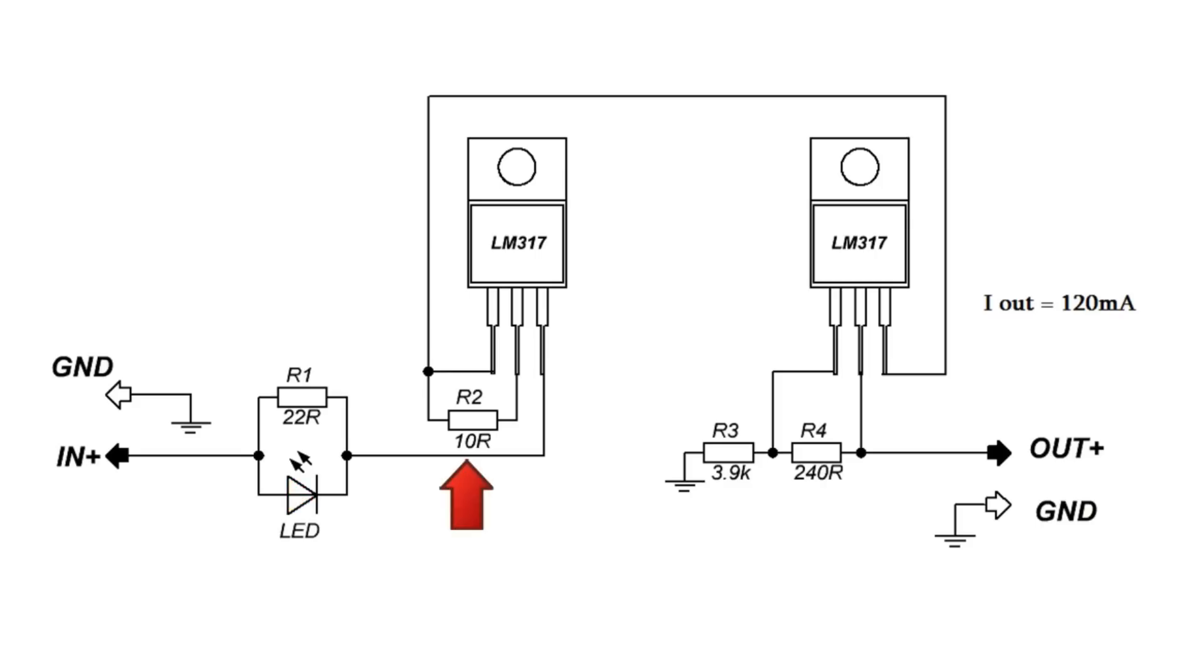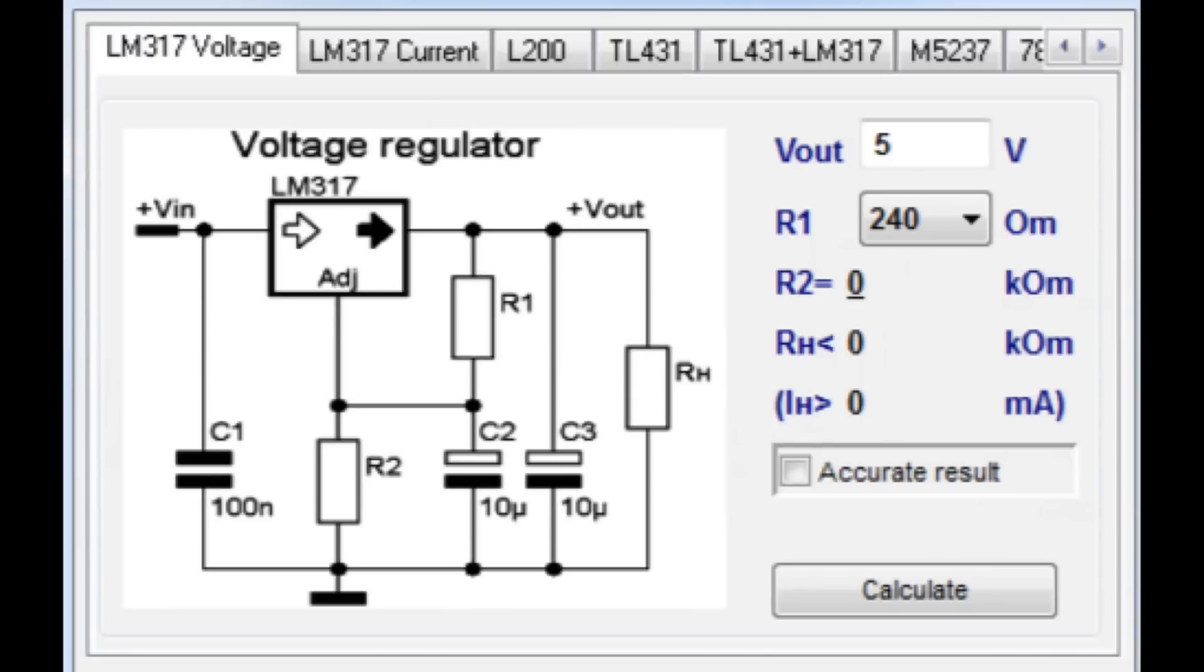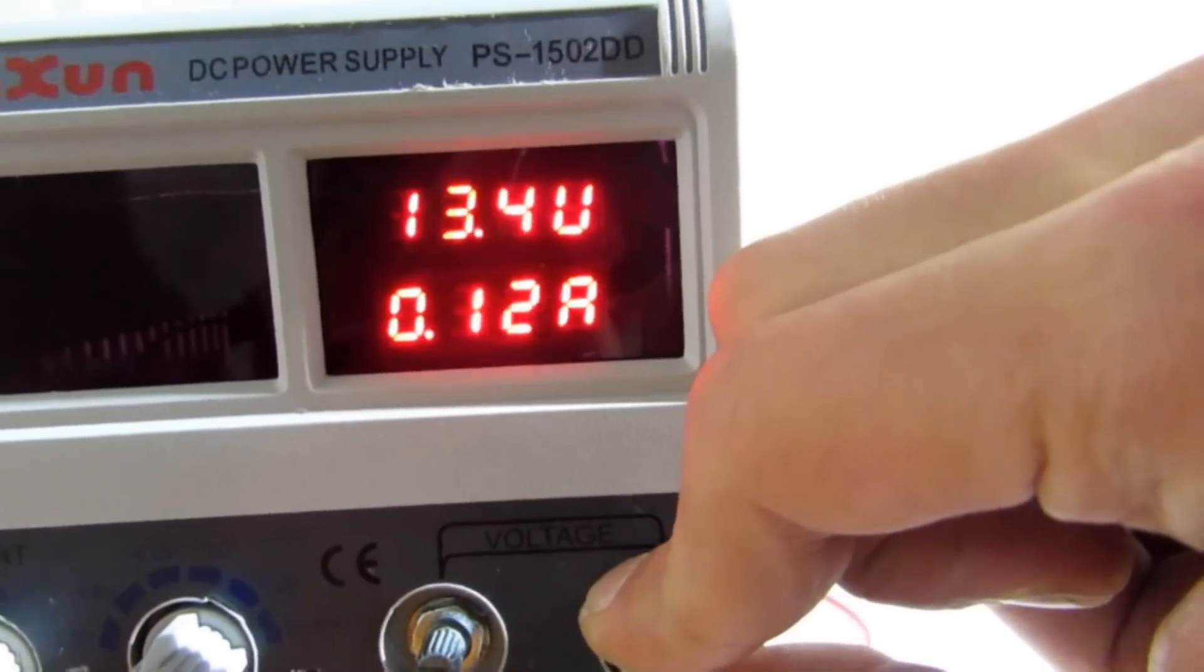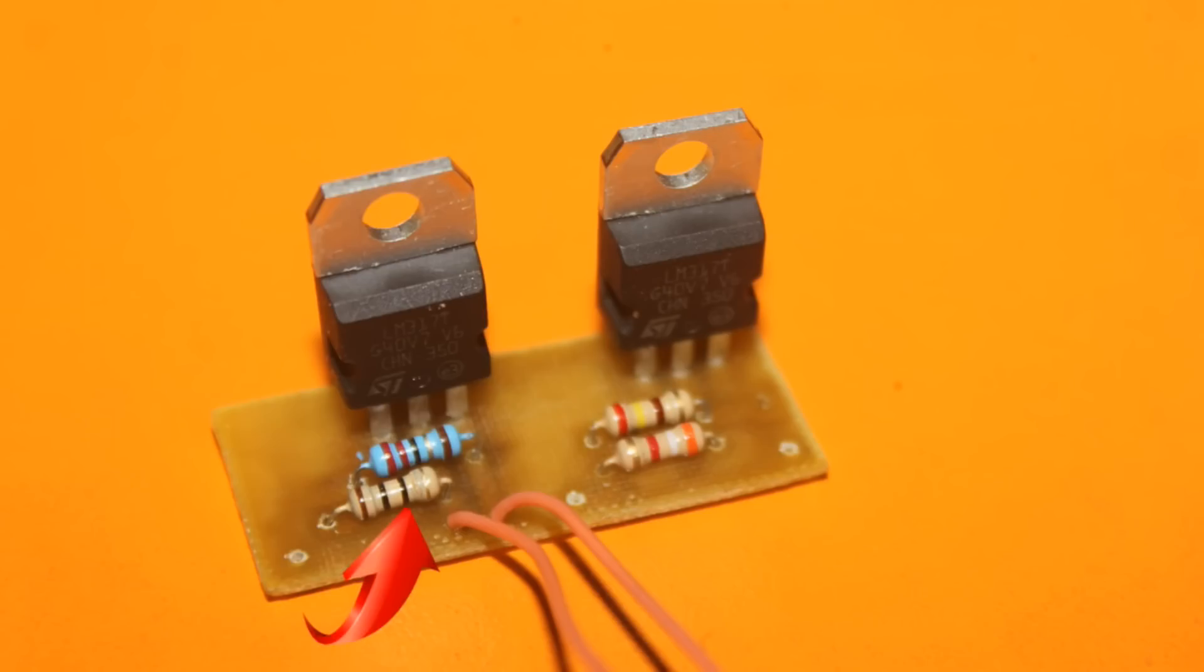Resistor R2 sets the greatest output current. I used 0.5 Watt resistor, but also can be 0.25 Watt. There are online programs to calculate the LM317 parameters. In my case, for current 120mA, R2 equals 10 Ohms.